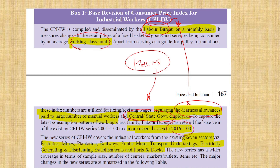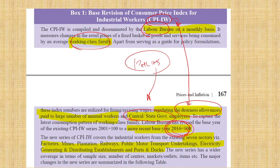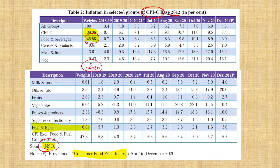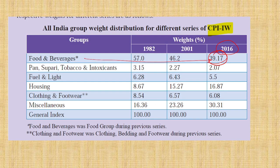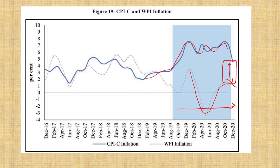Consumer price index for industrial workers (CPI-IW): base year is 2016, released by the Labour Bureau, used for calculating dearness allowance of central and state government employees and paid to large manual workers. Its food and beverages weight is 40%. So CPI has 45%, CPI-IW has 40% — CPI is higher than industrial workers index. Currently, CPI is high while the wholesale price index is low.